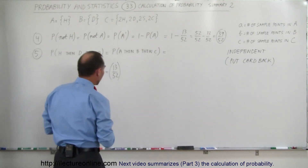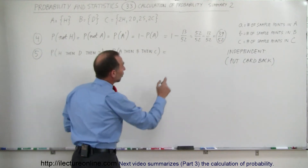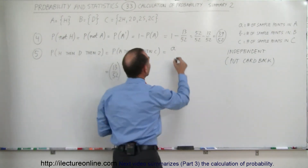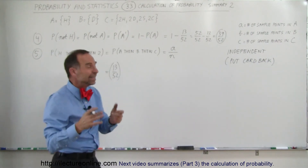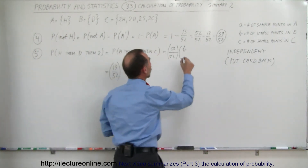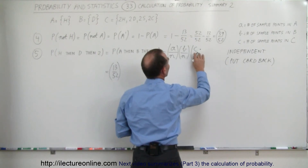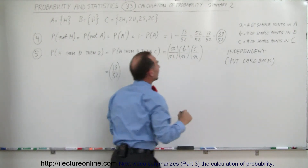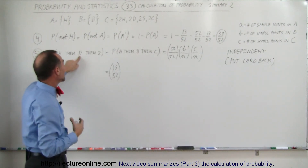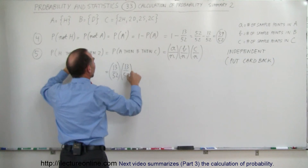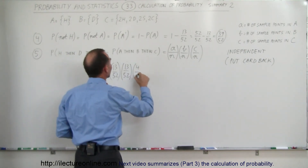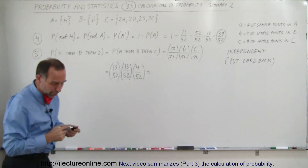In general terms, we write it as (a/N) times (b/N) times (c/N), where a, b, c are the total sample points in each event and N is the total cards in the deck. So that's 13/52 for hearts, times 13/52 for diamonds — because there are 13 cards of each suit — times 4/52 for a 2, since there are four 2s in the deck. We need a calculator for the final result.